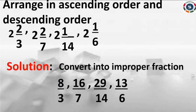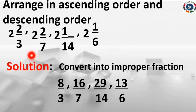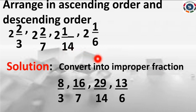Now we are going to study arranging in ascending order and descending order. We have four mixed numbers: 2 and 2/3, 2 and 2/7, 2 and 1/14, and 2 and 1/6. All four numbers are mixed numbers. To find which is smaller or greater, it is difficult with mixed numbers. So first we convert the mixed fractions into improper fractions.